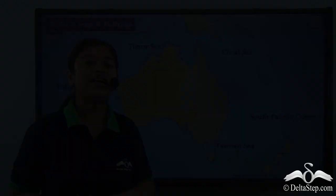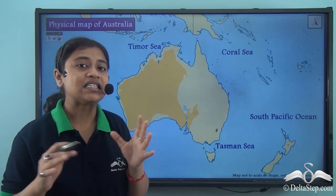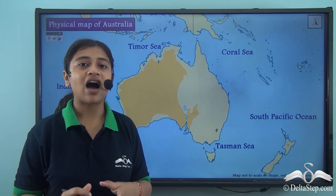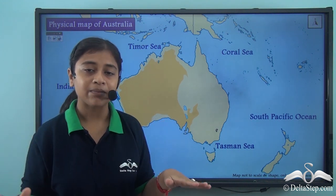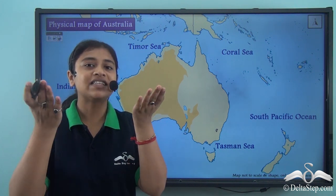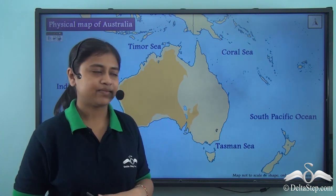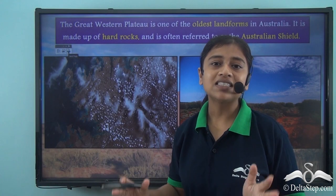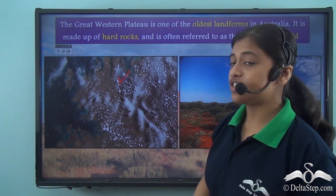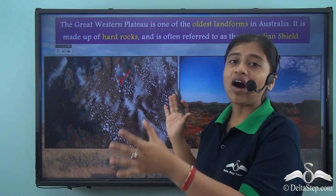The Great Western Plateau is an arid and semi-arid region that covers the entire western half of the continent. It is a high elevated land with a flat terrain, a rugged surface, and high cliffs. From space, the Great Western Plateau region looks like a vast red landscape.